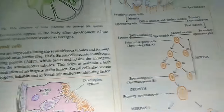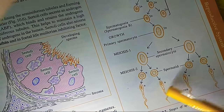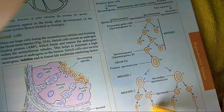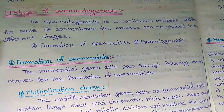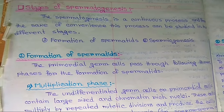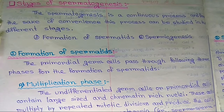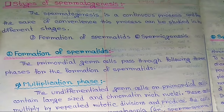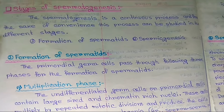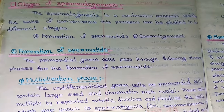The spermatogenesis is a continuous process and for the sake of convenience this process can be studied in two different stages. The first stage is the formation of spermatids, and the second stage is spermiogenesis. I will first discuss the formation of spermatids, where the primordial germ cells pass through three phases.